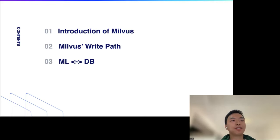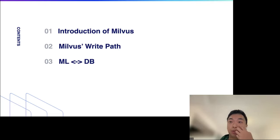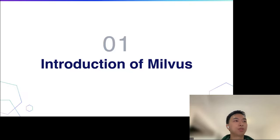We'll cover three aspects in today's presentation. First, a brief introduction of Milvus's general architecture, where you may notice its uniqueness compared to other similar products. Then I'll dig into the design of an important component — the write path — showing how Milvus is designed with a focus on machine learning. Last but not least, I'll discuss our challenges and solutions in the broader context of the machine learning boom.